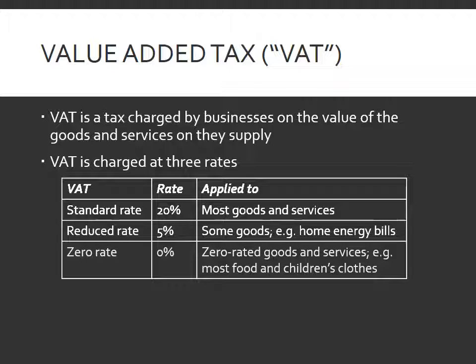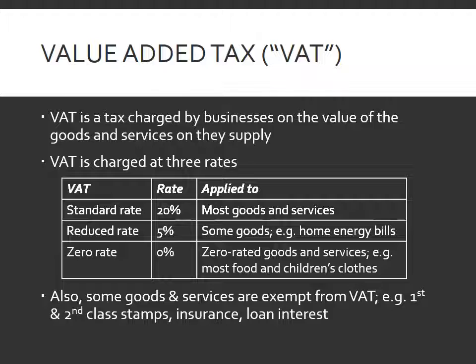And lastly, we have zero-rated sales. This is where there's a VAT rate of 0% applied, and this is used for supplies and goods of things such as most foods and children's clothes. In addition to that, there are also some goods and services that are just what's called exempt from VAT — so VAT is just not even considered. That would include first and second class stamps, insurance, and loan interest.